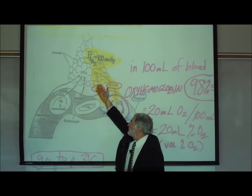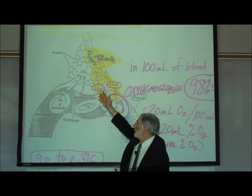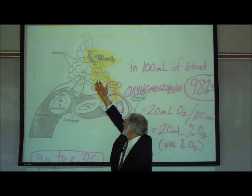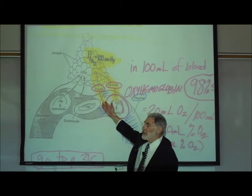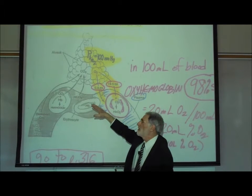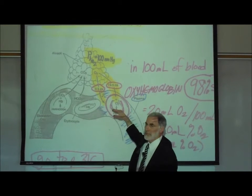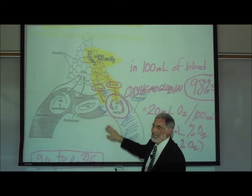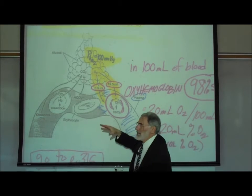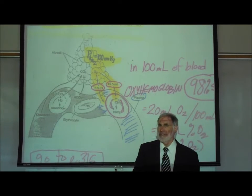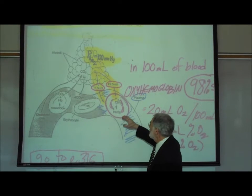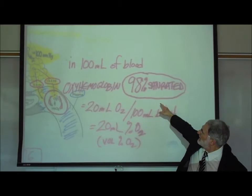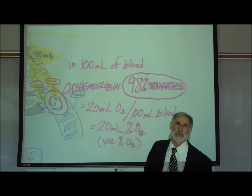The oxygen is going to diffuse out of the alveoli into the bloodstream, diffusing down its concentration gradient. The oxygen initially diffuses into the plasma, but the majority of oxygen will then enter the red blood cells and attach or bind to the hemoglobin inside the red blood cells. The hemoglobin binds oxygen very vigorously such that the hemoglobin becomes 98% saturated with oxygen.